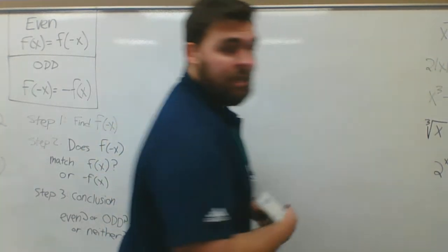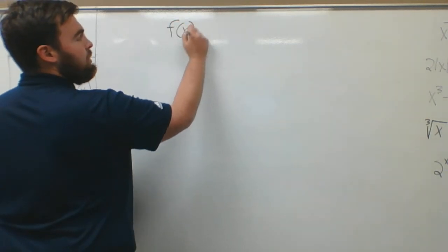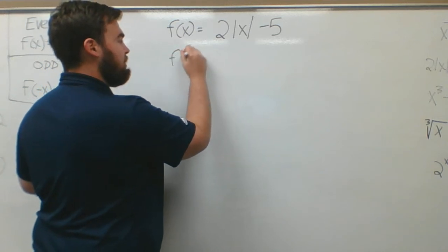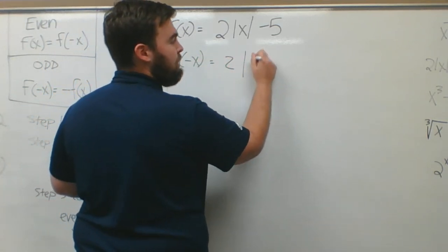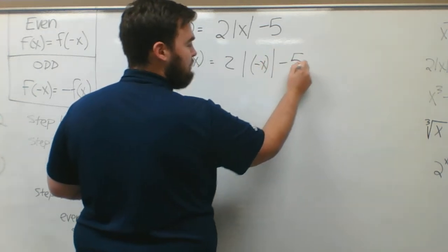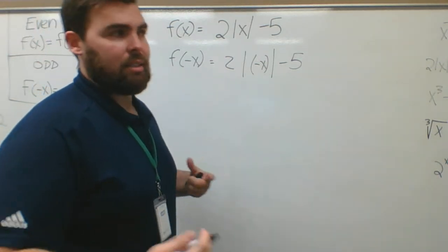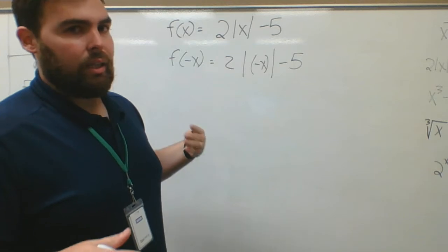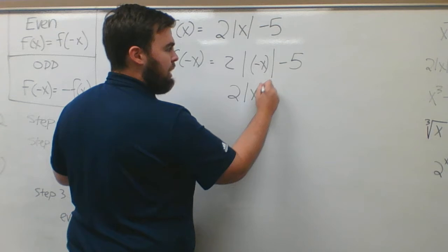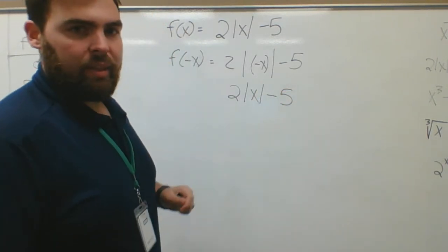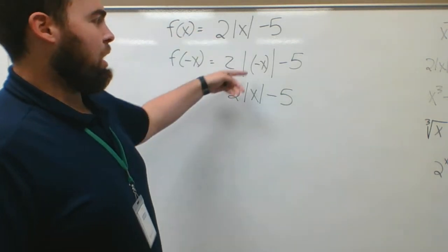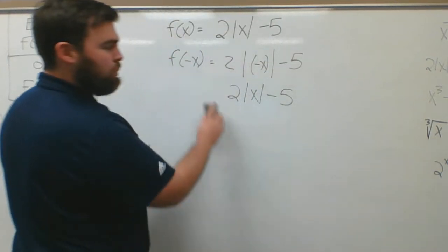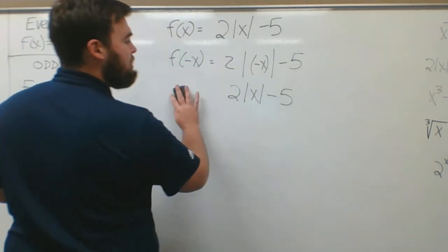Example two: f of x equals 2 times absolute value of x minus 5. Step one — f of negative x is 2 times absolute value of parentheses negative x, minus 5. Absolute value eliminates anything negative — it makes any negative into a positive. So if I plug in negative 100, it becomes positive 100. So really the absolute value of negative x is just the absolute value of x, meaning this becomes 2 times absolute value of x minus 5. This matches the original f of x, so this is even.